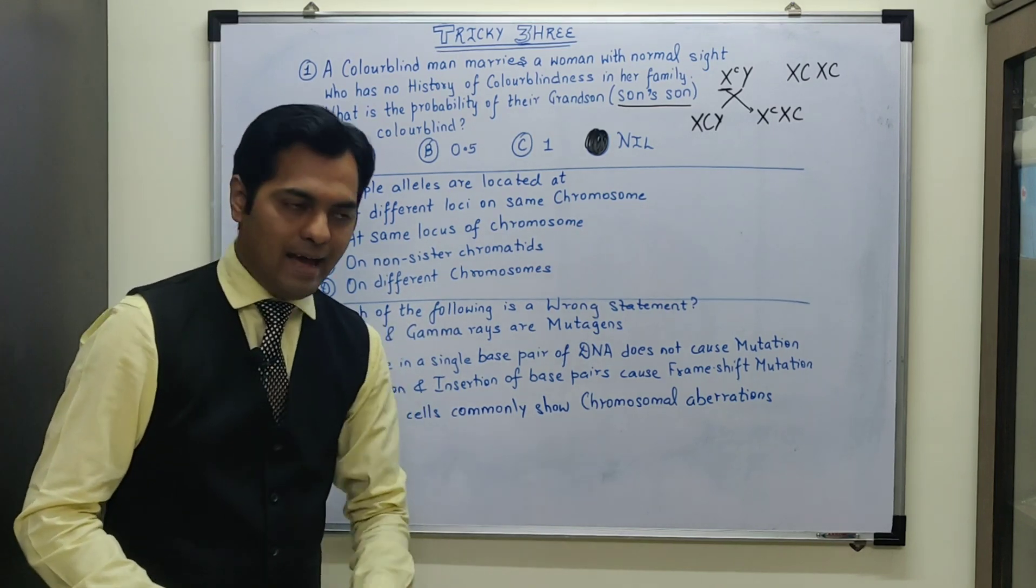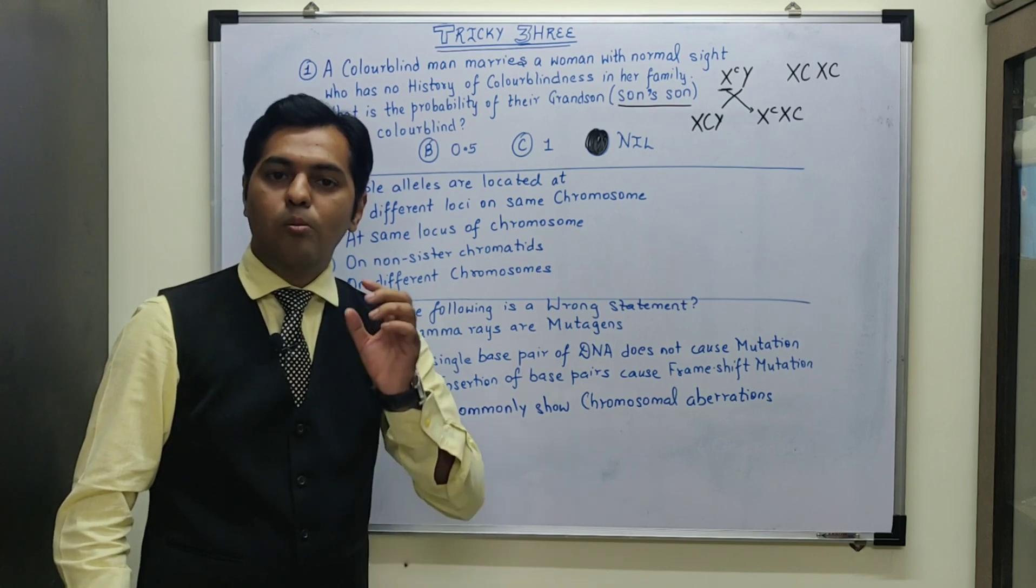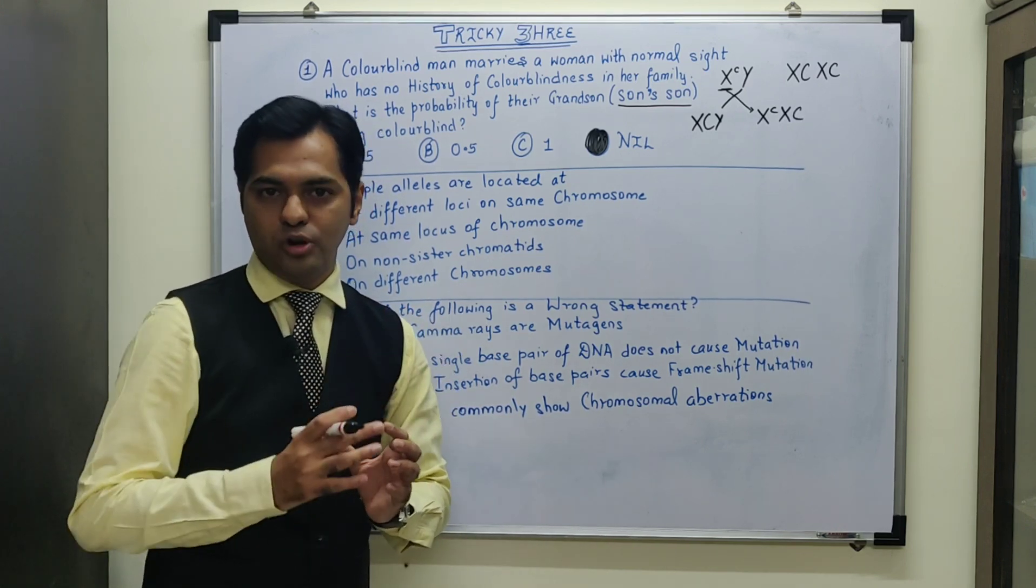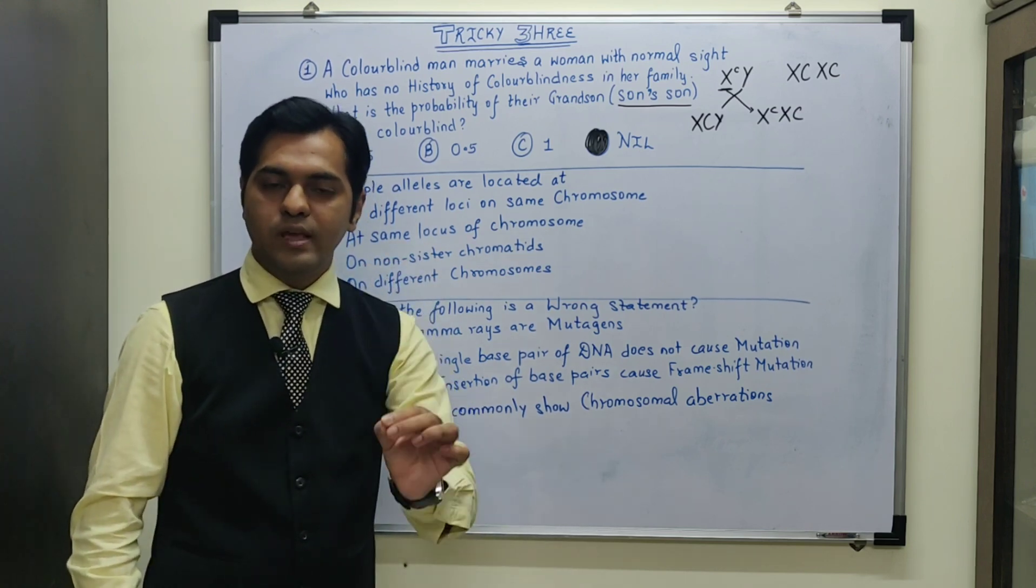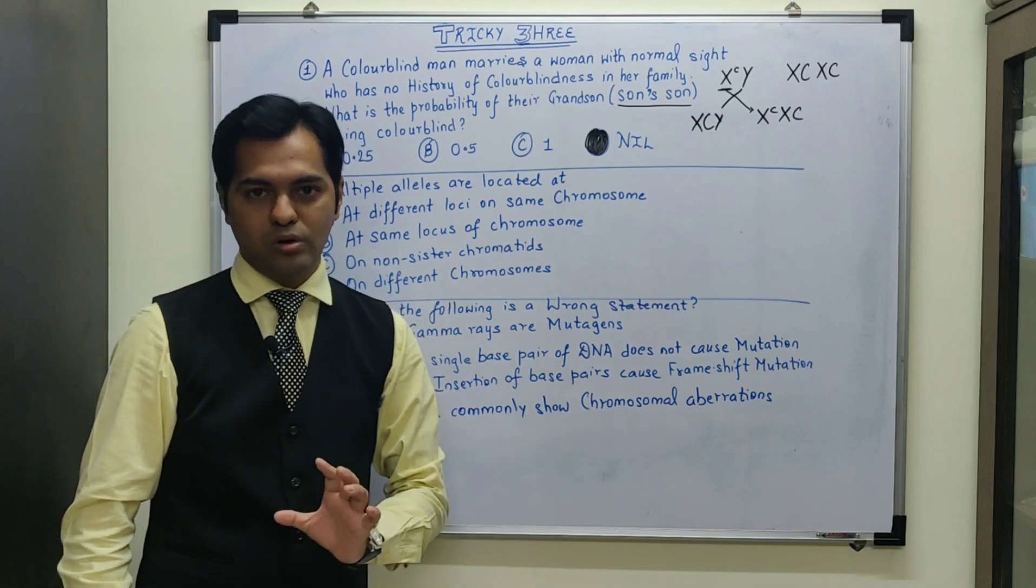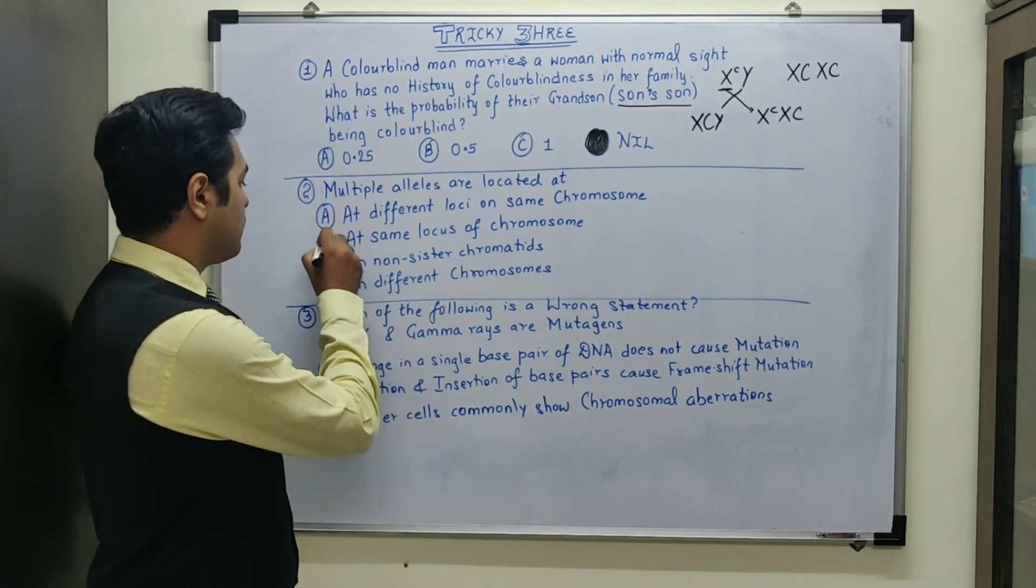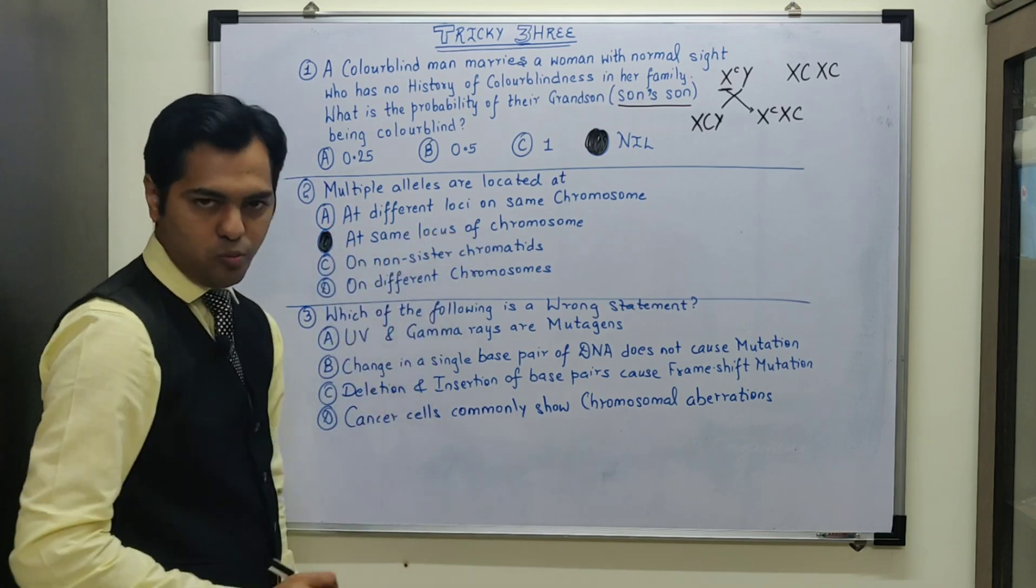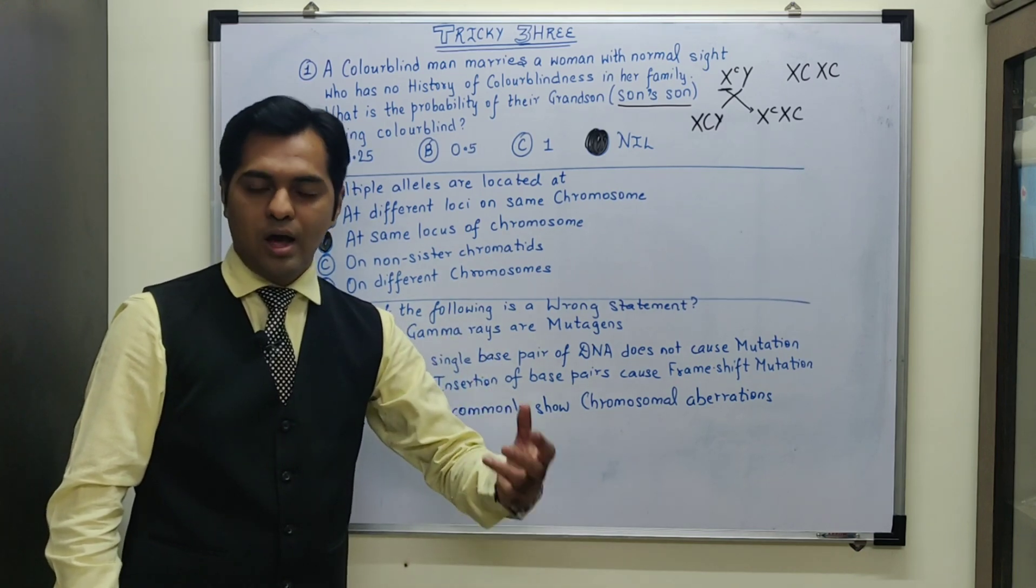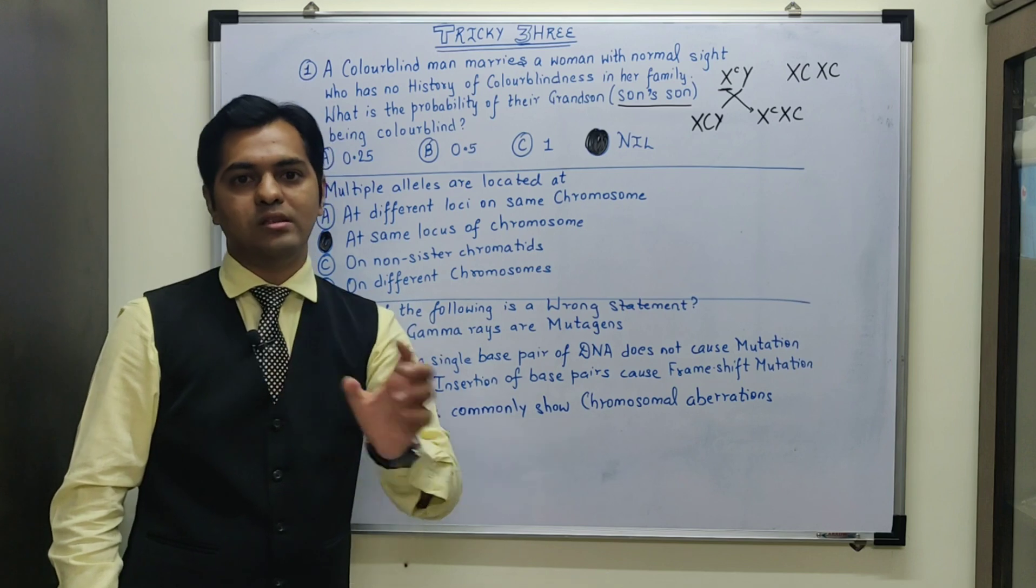Remember future doctors that the multiple alleles are actually produced by the mutation of the wild type of alleles, and that is how multiple alleles are produced. It always occupies the same locus where the wild type of alleles are usually found. So multiple alleles are found at the same locus of a particular chromosome. Because of mutation, when multiple alleles are produced, out of that multiple alleles only any two alleles can occupy the same locus.